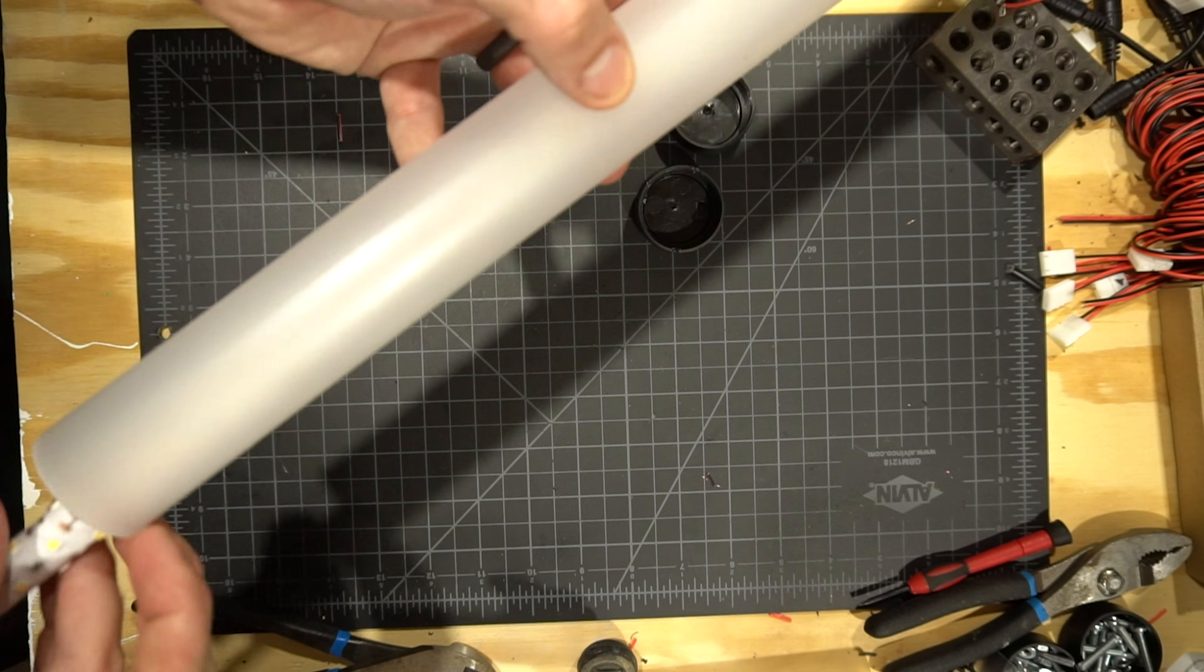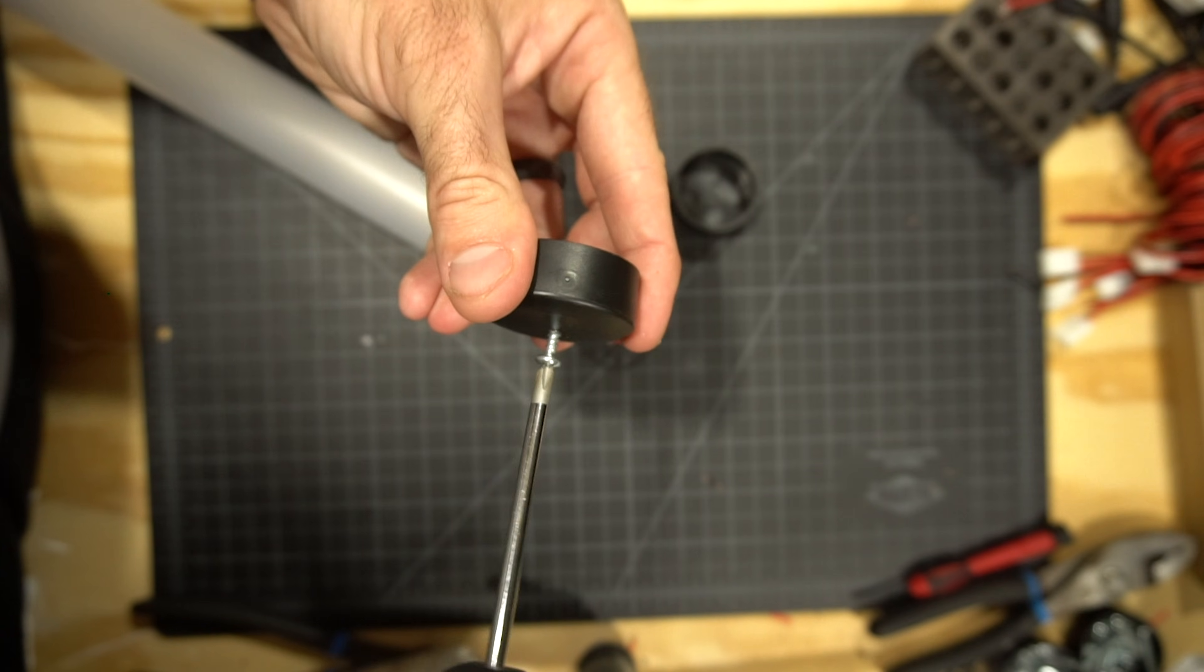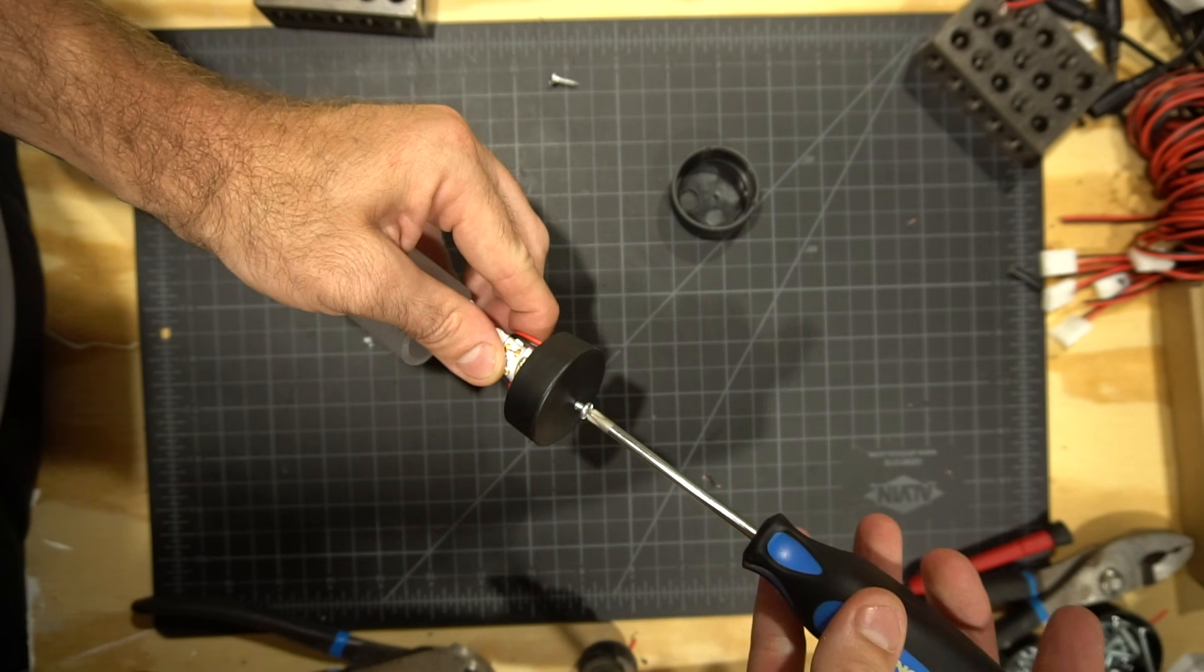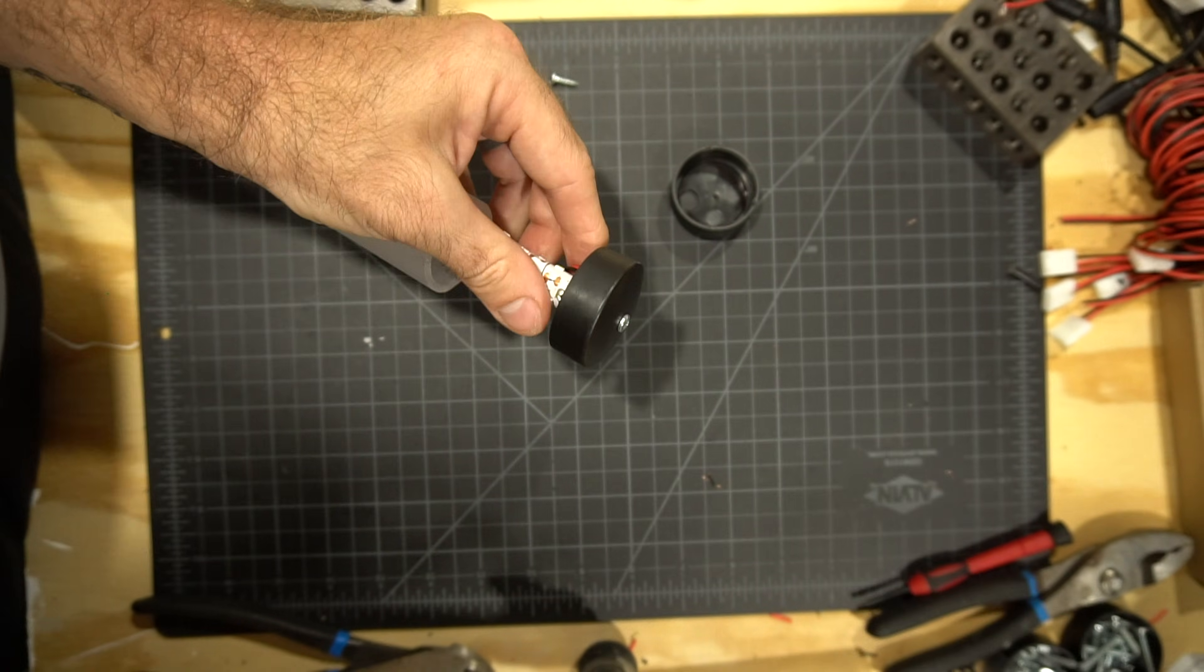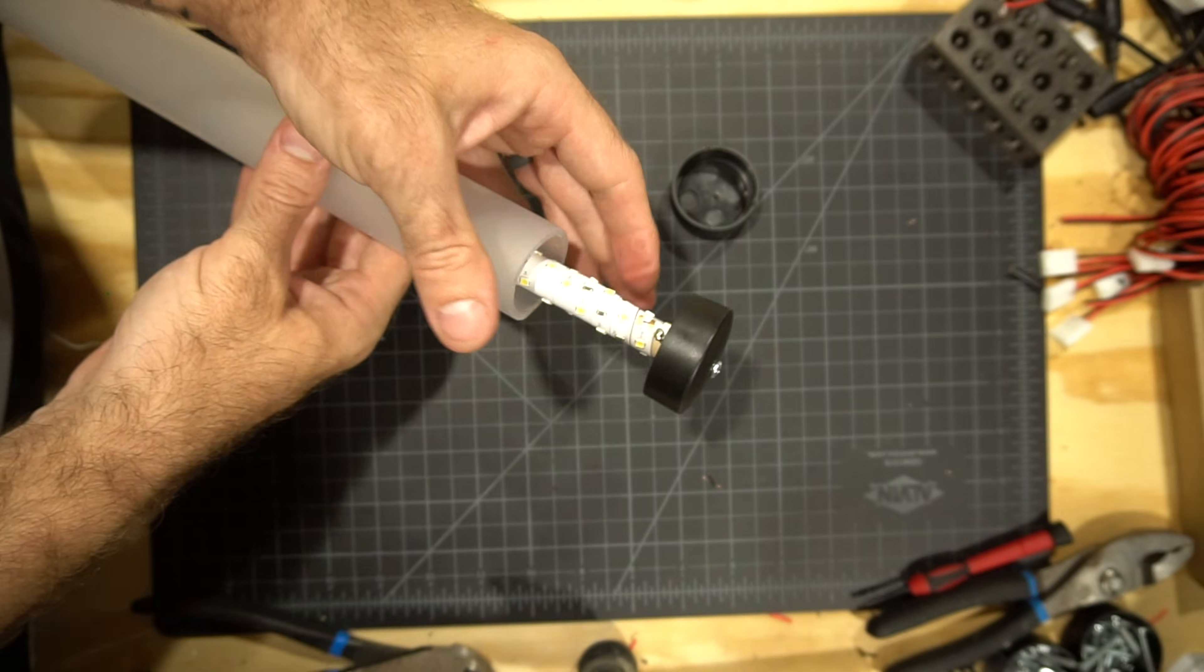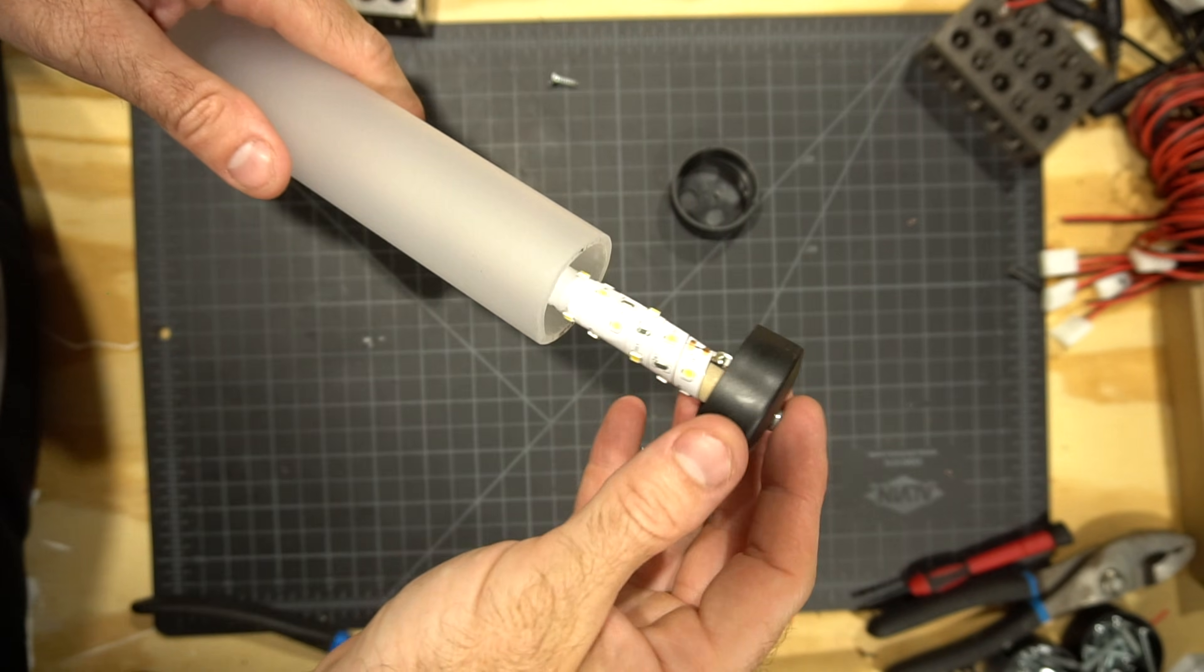Slide your LED stick into the acrylic tube, and then start one of the screws through the end cap without the larger hole in it. Finish screwing it into the far end of this LED stick, and then slide that onto your tube. It should fit nice and snug.